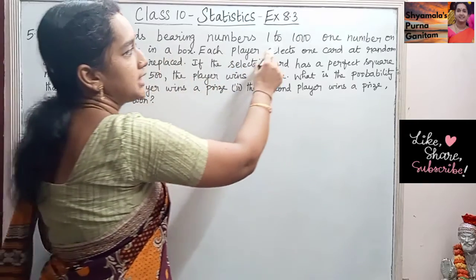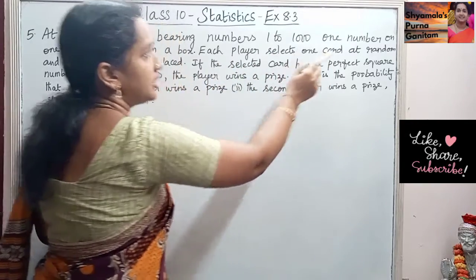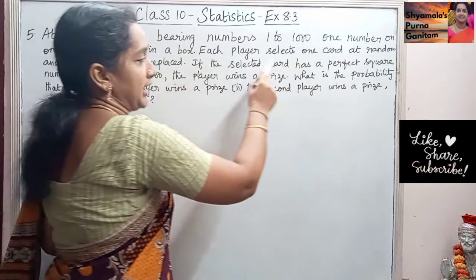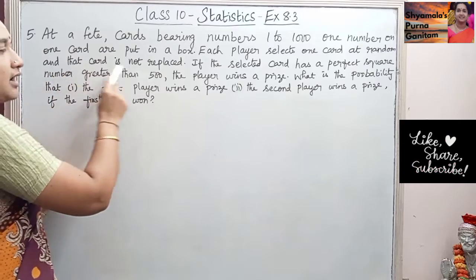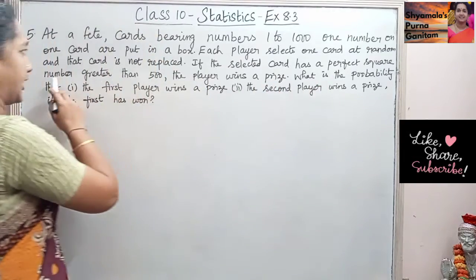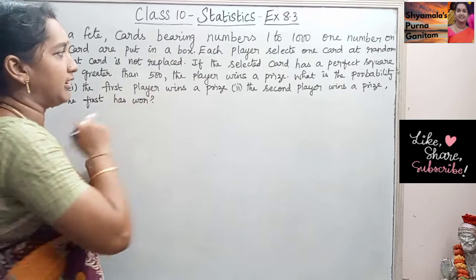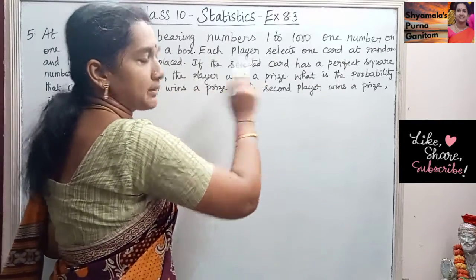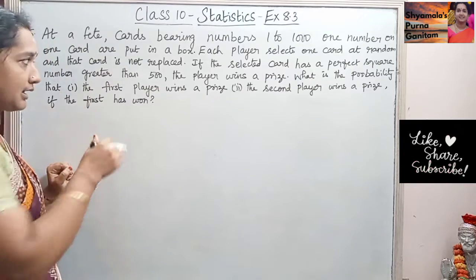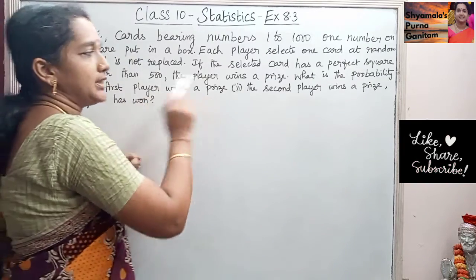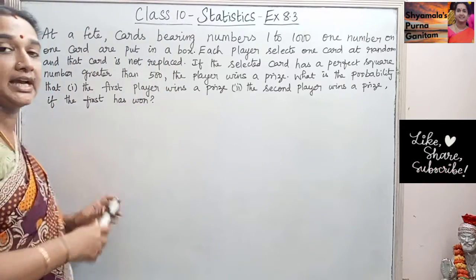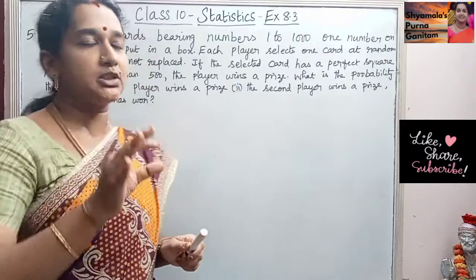At a fete, cards bearing numbers 1 to 1000, one number on one card, are put in a box. Each player selects one card at random and that card is not replaced. If the selected card has a perfect square number greater than 500, the player wins a prize. What is the probability that: one, the first player wins a prize; two, the second player wins a prize if the first has won? These are the questions.